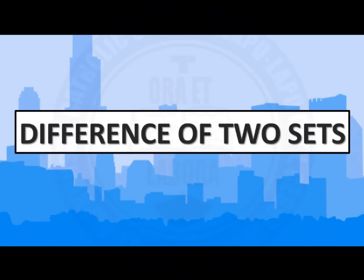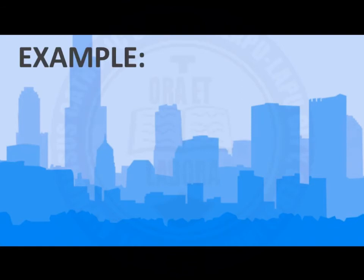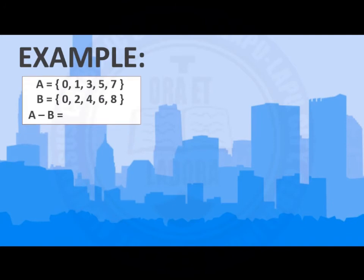Congratulations, my dear learner. You are done with the third set operation. Now we will proceed to the last operation of sets, and that is the difference of two sets. What do you mean by difference of two sets? Or, how do we perform difference of two sets? I will show you an example. Suppose we are given two sets, A and B. Set A has elements 0, 1, 3, 5, and 7. Set B has elements 0, 2, 4, 6, and 8. We are asked to find the difference of A and B, or A minus B.